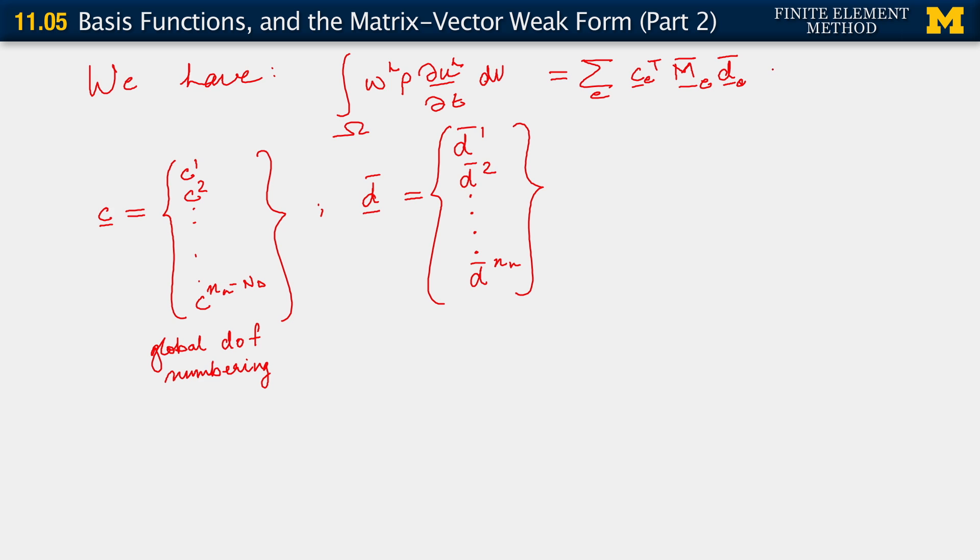What that lets us do is go from here to saying: if we have these vectors c transpose, c, and d̄ defined, then what we have here is c transpose m̄ d̄. Where m̄ is the assembly over all elements of the m̄e matrix—the consistent element mass matrices.